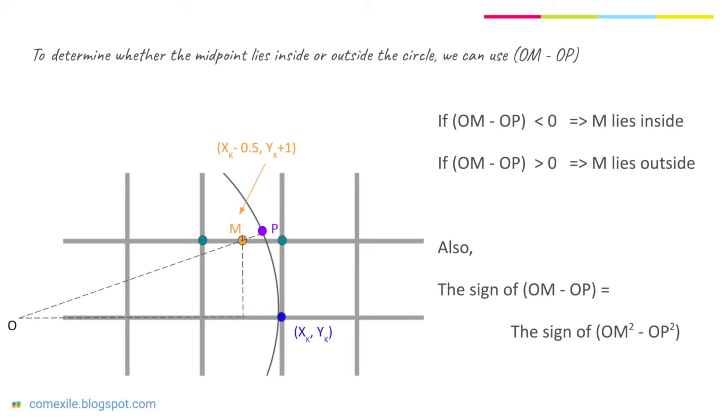For simplicity for the later calculations, we can note here that the sign of (OM - OP) is always the same as the sign of (OM² - OP²).